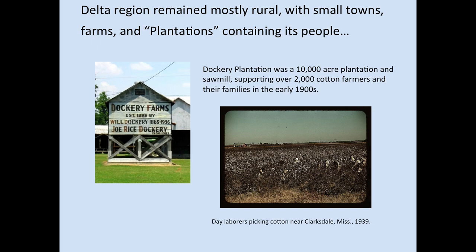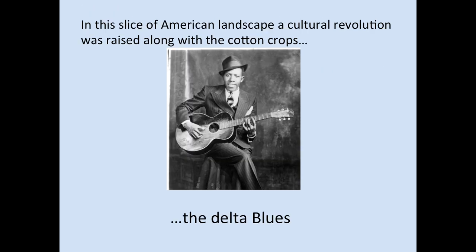Even after the abolition of slavery, the rise of a sharecrop economy saw many African American people — some of them former slaves, others the descendants of former slaves — continue to live on the Delta lands, many of them picking cotton into the 20th century. Former slave-labor plantations were now given over to sharecrop plantations, and in many cases the old names remained. The Dockery Plantation was a 10,000-acre plantation and saw mill supporting over 2,000 cotton farmers and their families in the early 1900s. In this slice of American landscape, a cultural revolution was raised alongside the cotton crops — what comes to be known as the Delta Blues.